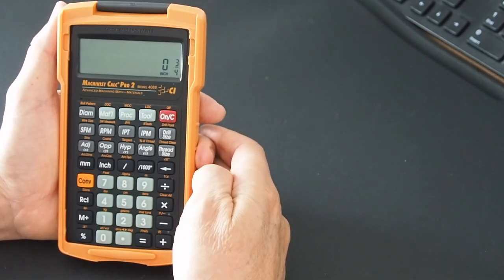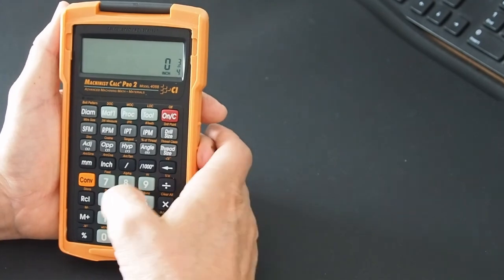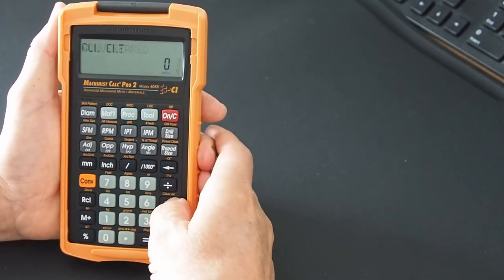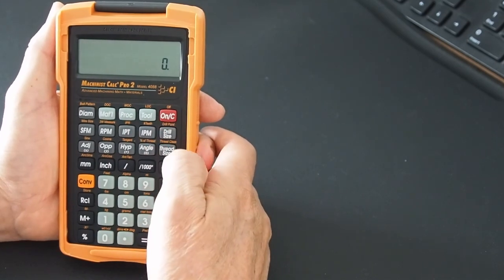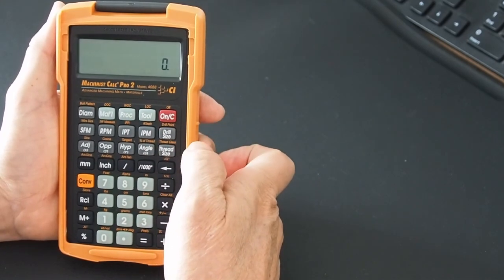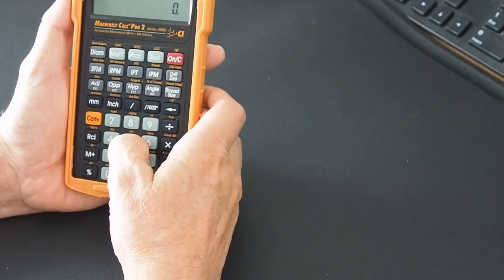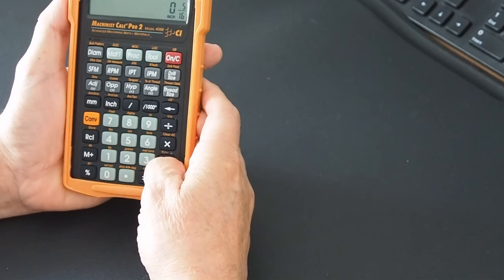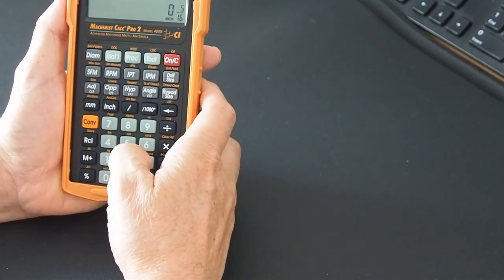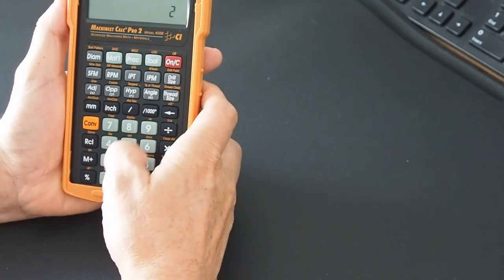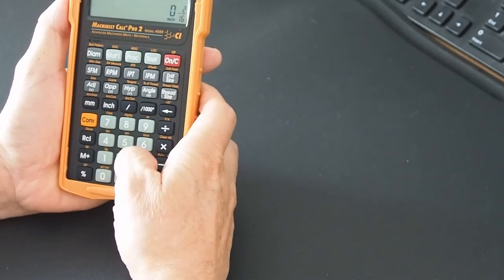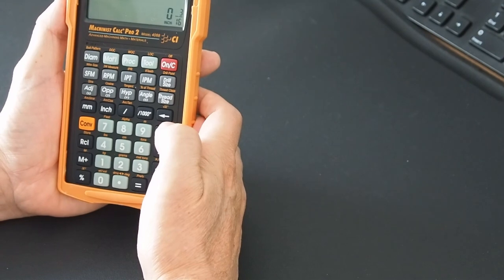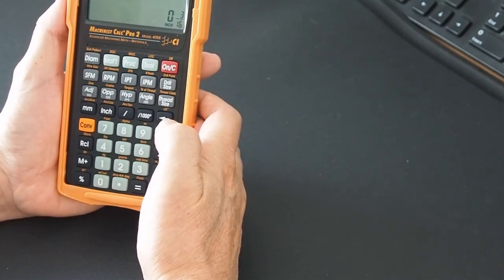Now for subtraction. Let's clear the previous working. We're pressing the CONV button and the X, and we can see all clear displayed. Let's go for 5 forward slash 16 minus 2 forward slash 16 equals 3 sixteenths. So that's 2 down, 2 to go.